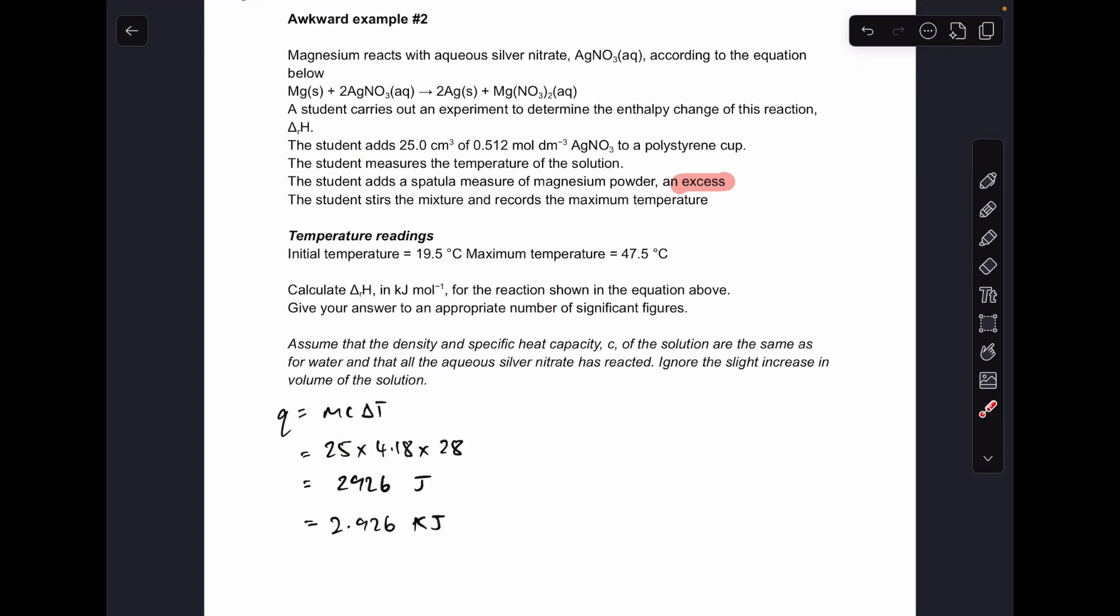So we're using 25 for M because the volume of the solution is 25 cm cubed. And we've got that same thing going on. Density, specific capacity, same as water. And ignore the slight increase in volume. So 25 times 4.18 times 28 for that temperature rise. 2926 joules, 2.926 kilojoules.